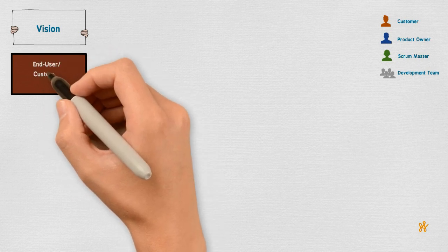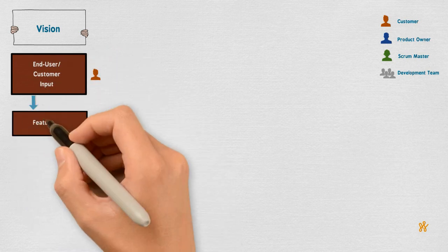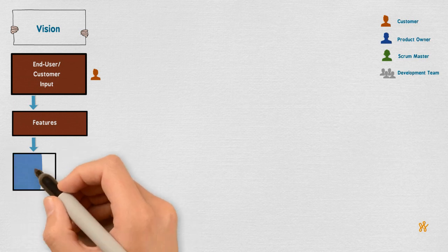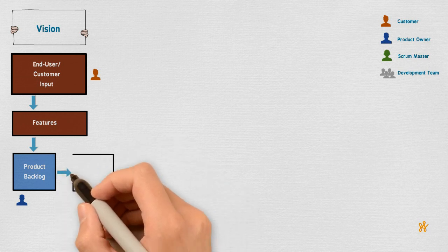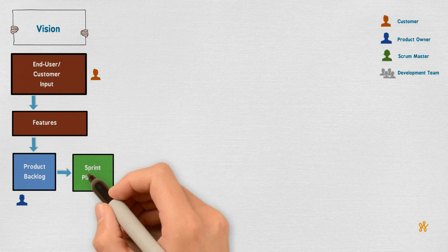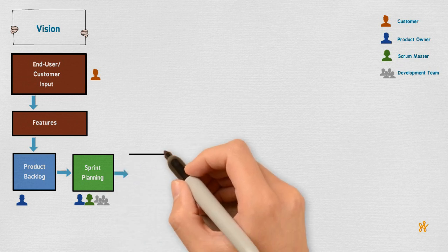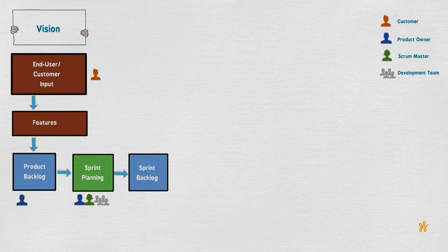Let's further zoom in on one of the sprints. It begins with the vision and the customer's input, based on which we define the product features, populating the product backlog that is the responsibility of the product owner. Then the team, which comprises the product owner, the Scrum master, and the development team, will meet at their first ceremony — sprint planning — in which the sprint features will be identified, showing what is the value of this sprint, what will be accomplished, and how it will be accomplished. Accordingly, we will have a sprint backlog with the features and user stories to be done in this sprint.